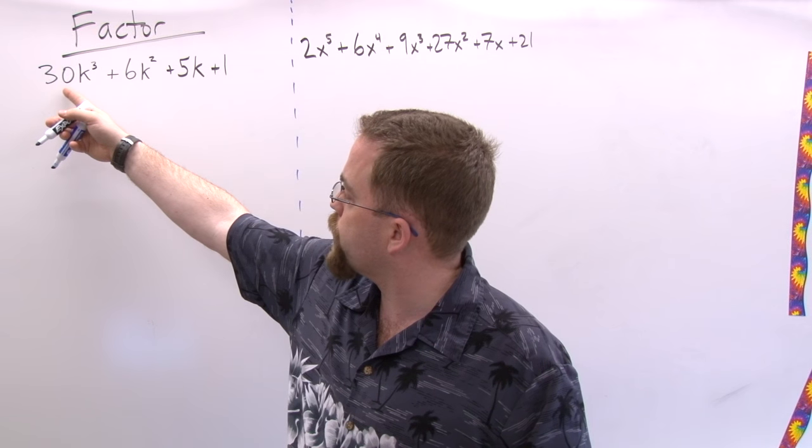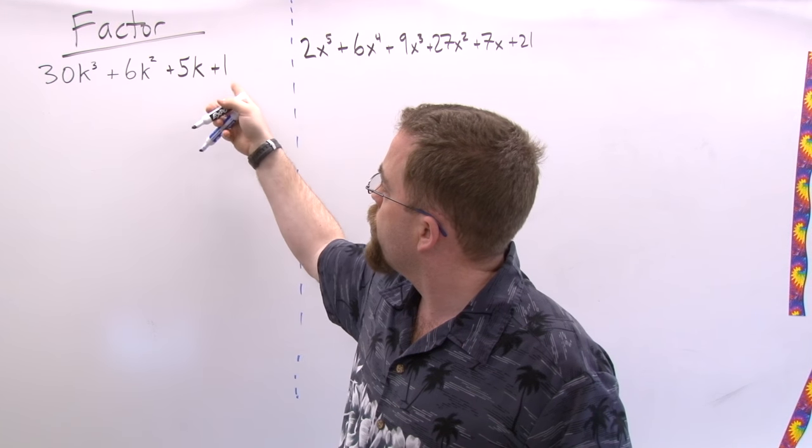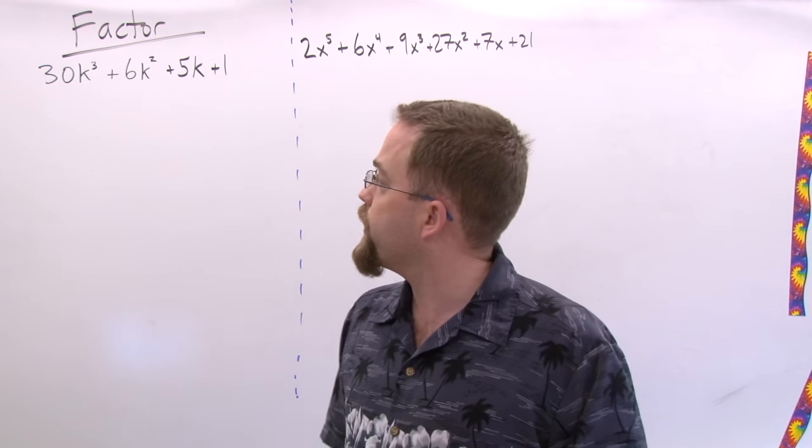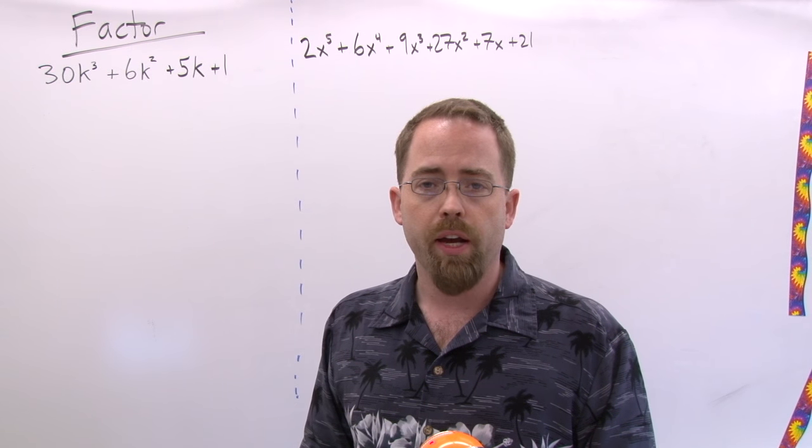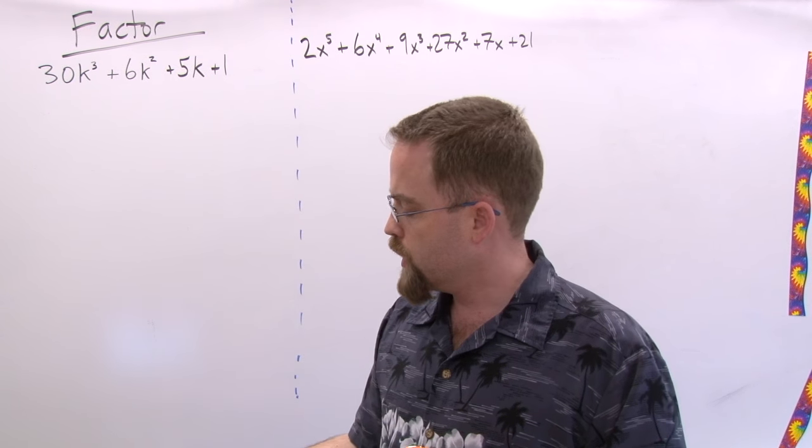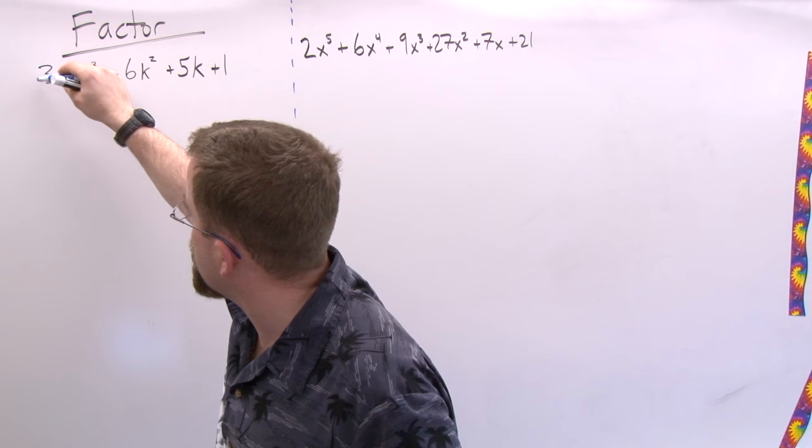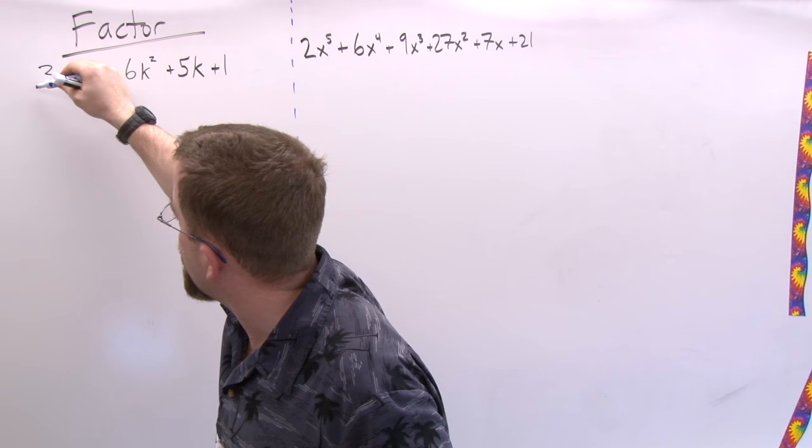So we can see right here in this first problem that we are having four different terms and that we should look to see how factoring by grouping might help us here. So the key is to take things two at a time.